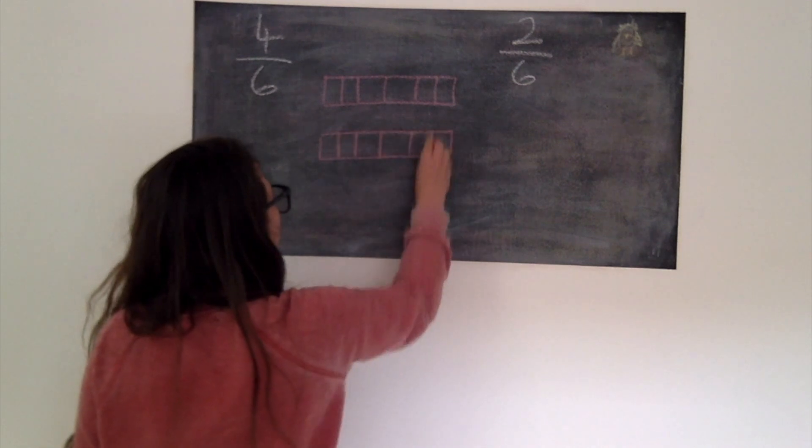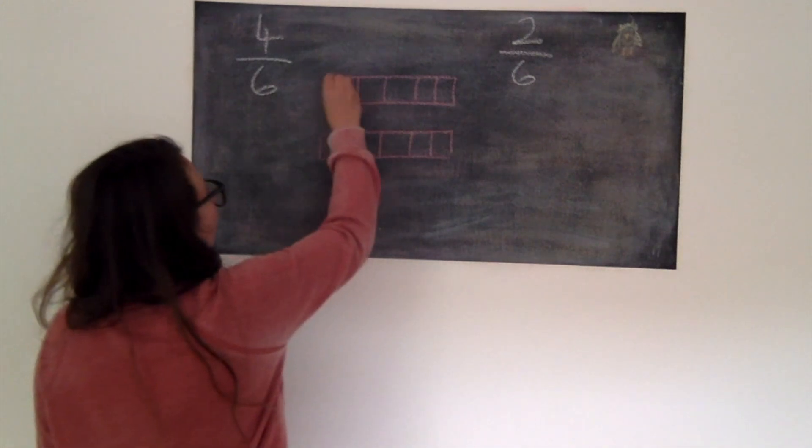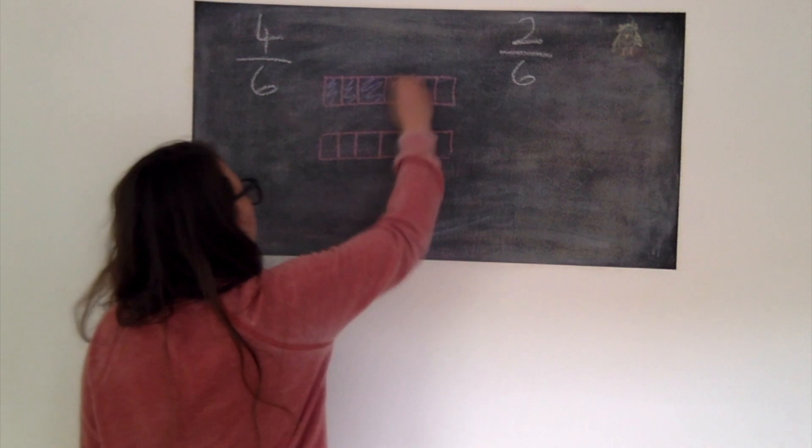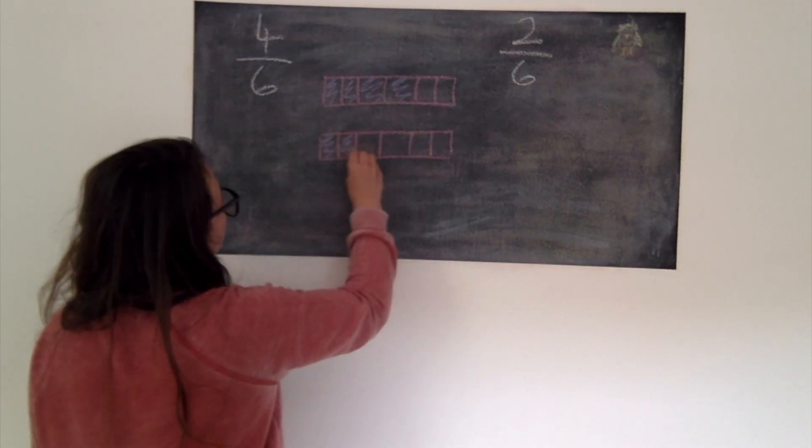Once you have your 2 bar models split into 6 you needed to shade in the part from your numerator. So the first one we had 4 parts out of 6 were shaded. There's our 4/6ths and for the second one we had 2 out of 6 shaded.